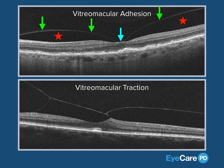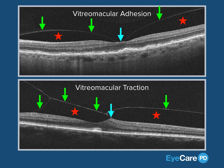Meanwhile, when the posterior cortical vitreous is visible on OCT imaging, and seen with a space between the retina and vitreous, but the retinal tissue is pulled and altered in its normal anatomic configuration, we call this vitreomacular traction, or VMT.